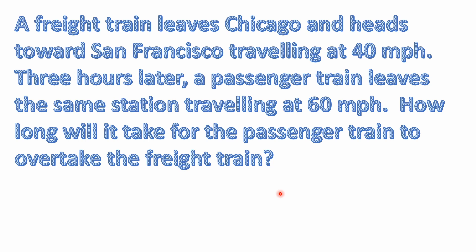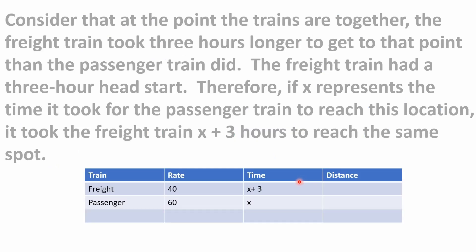All we know right now is the speeds — both trains are heading the same direction and the passenger train is traveling a little faster, so we know it's eventually going to overtake the freight train. There's a long distance between Chicago and San Francisco, so that 20 mile per hour difference will catch up. The key point is that at the moment the passenger train overtakes the freight train, the freight train took three hours longer to get to that point — it had a three-hour head start.